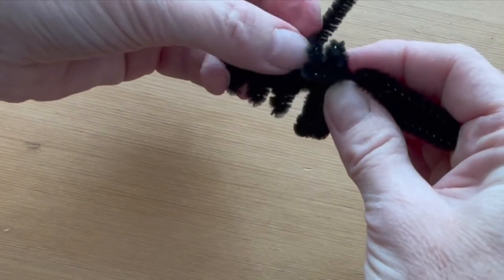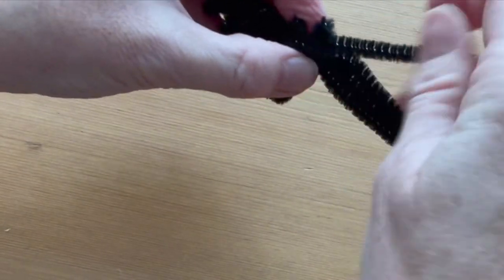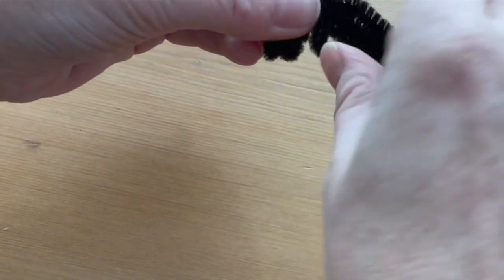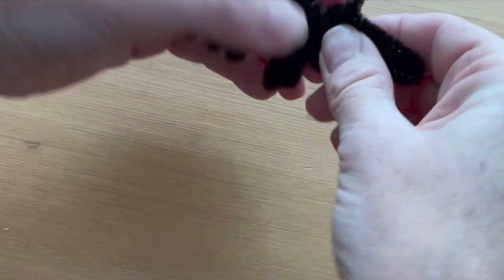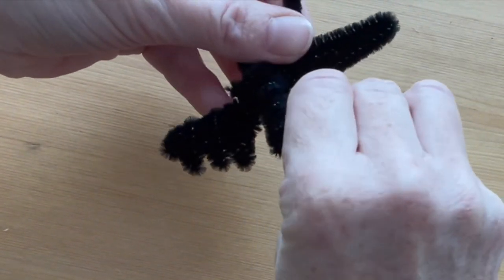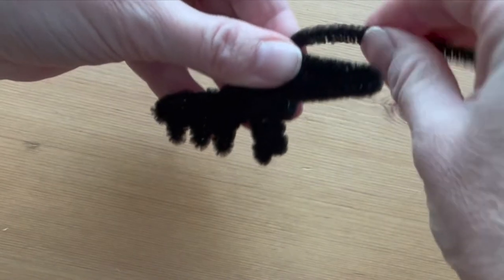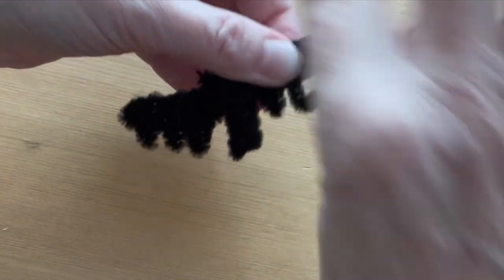To get over to the other side, just bring that pipe cleaner around the back of the head. Start with the inside of the wing, over and around, making the points.